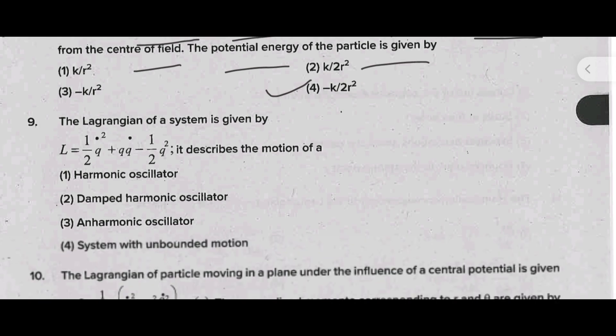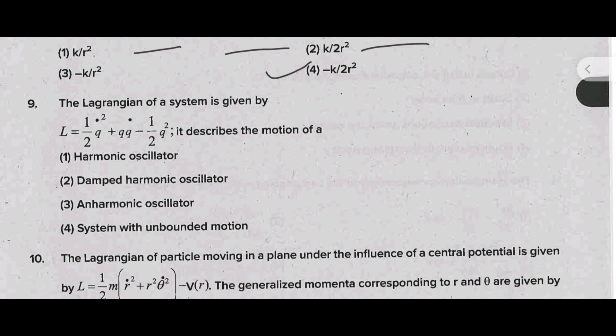The Lagrangian of a system is given by L equal to half Q dot square plus Q Q dot minus half Q square. It describes the motion of the following type. The correct answer is option A, harmonic oscillator. The above equation represents harmonic oscillator.